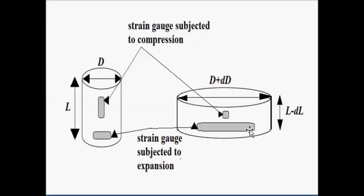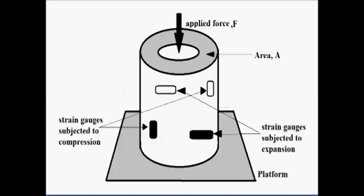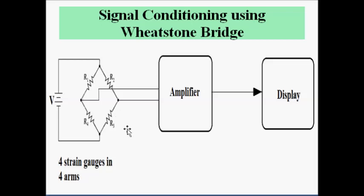The axial and circumferential strains can be converted into a suitable current or voltage signal with the help of a Wheatstone bridge. There are four strain gauges in total, forming the four arms of the Wheatstone bridge. The output is taken across the opposite end to the pair of ends across which the DC supply is connected. It is then amplified and given to a display unit. The four resistances in the bridge actually represent the four strain gauges.